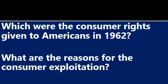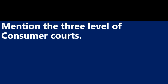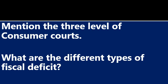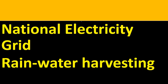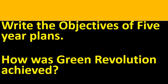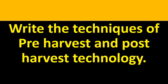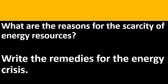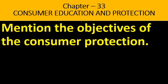Importance of public finance. What are the reasons for consumer exploitation? Mention the three levels of consumer codes. What are the different types of fiscal deficit? Write the objectives of the Five Year Plan. How was the Green Revolution achieved? Write the techniques of pre-harvest and post-harvest technology. What are the reasons for the scarcity of energy resources? Mention the objectives of consumer protection.